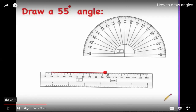You can decide to draw the line from the left or from the right. After you decide, if you draw it from the right you choose the scale where zero starts from the right; if you draw it from the left you choose the scale where zero starts from the left. Try to be quiet so you can listen to the video.